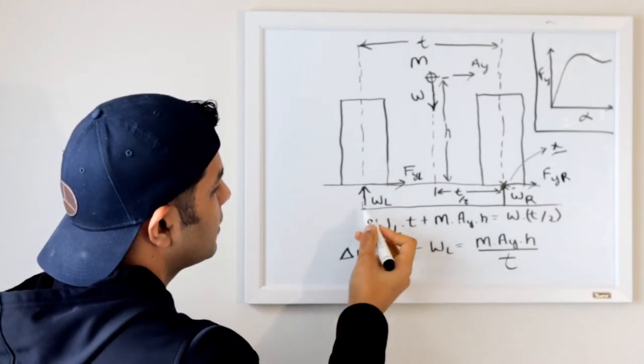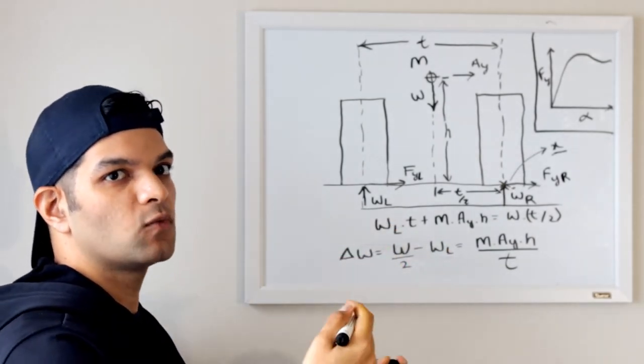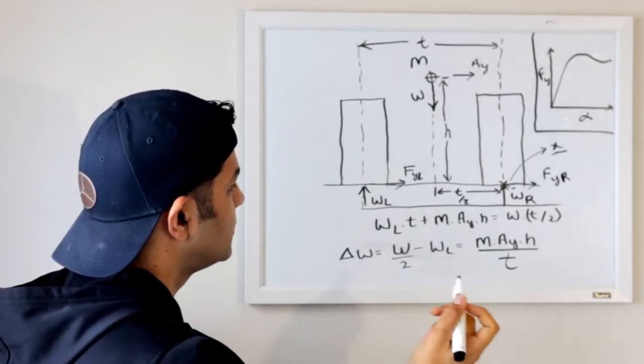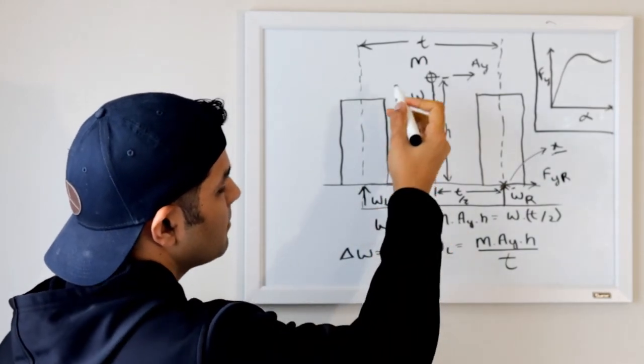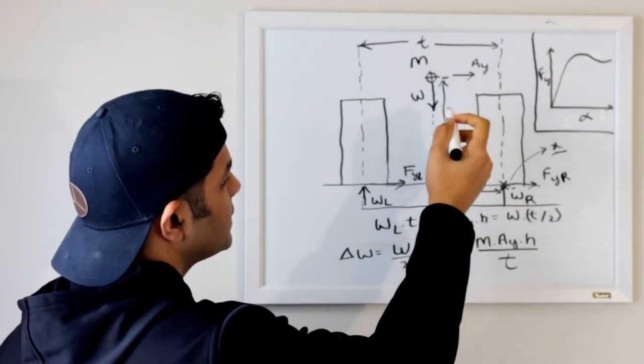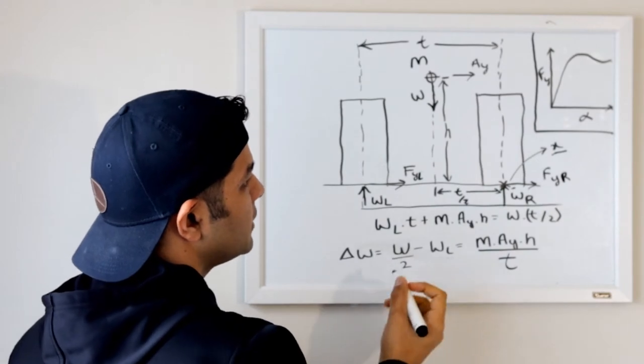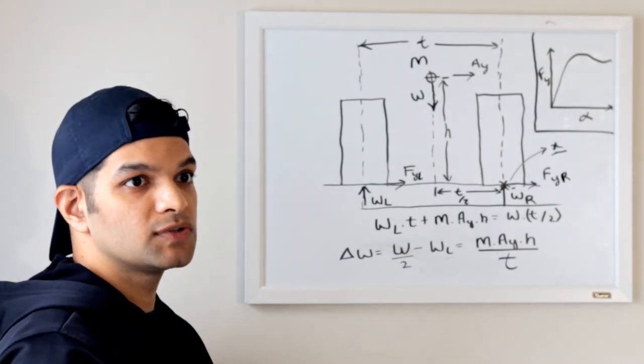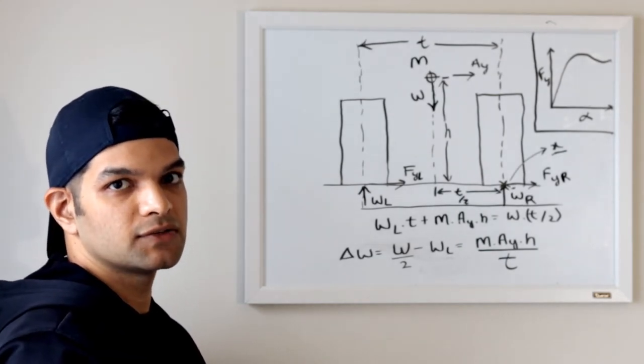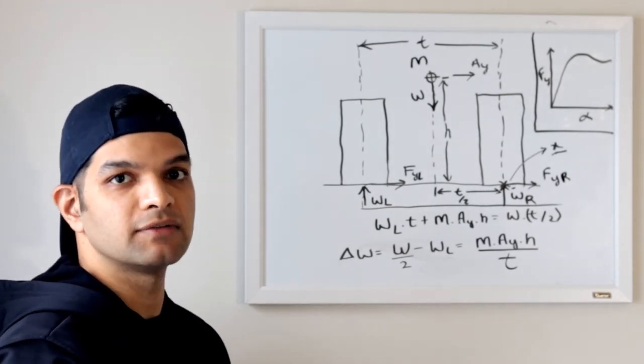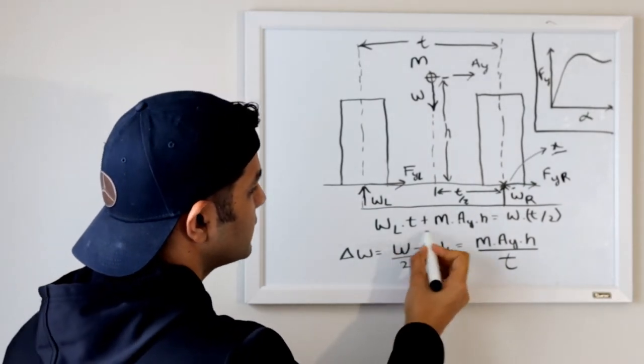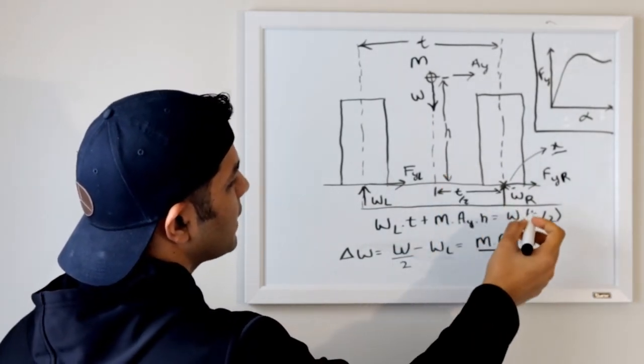So what we are doing over here, we put all the clockwise moments in one side and counterclockwise in the other side. So by that rule, we have WL times T, because that's the distance from the axis of rotation, plus mass times lateral acceleration times height of the center of gravity. The reason we are using mass instead of weight, because weight itself is a force. Mass times acceleration is force and force times axis of rotation is given as moment. So these two clockwise acting moments on one side and on the other side, we have weight times T by 2.